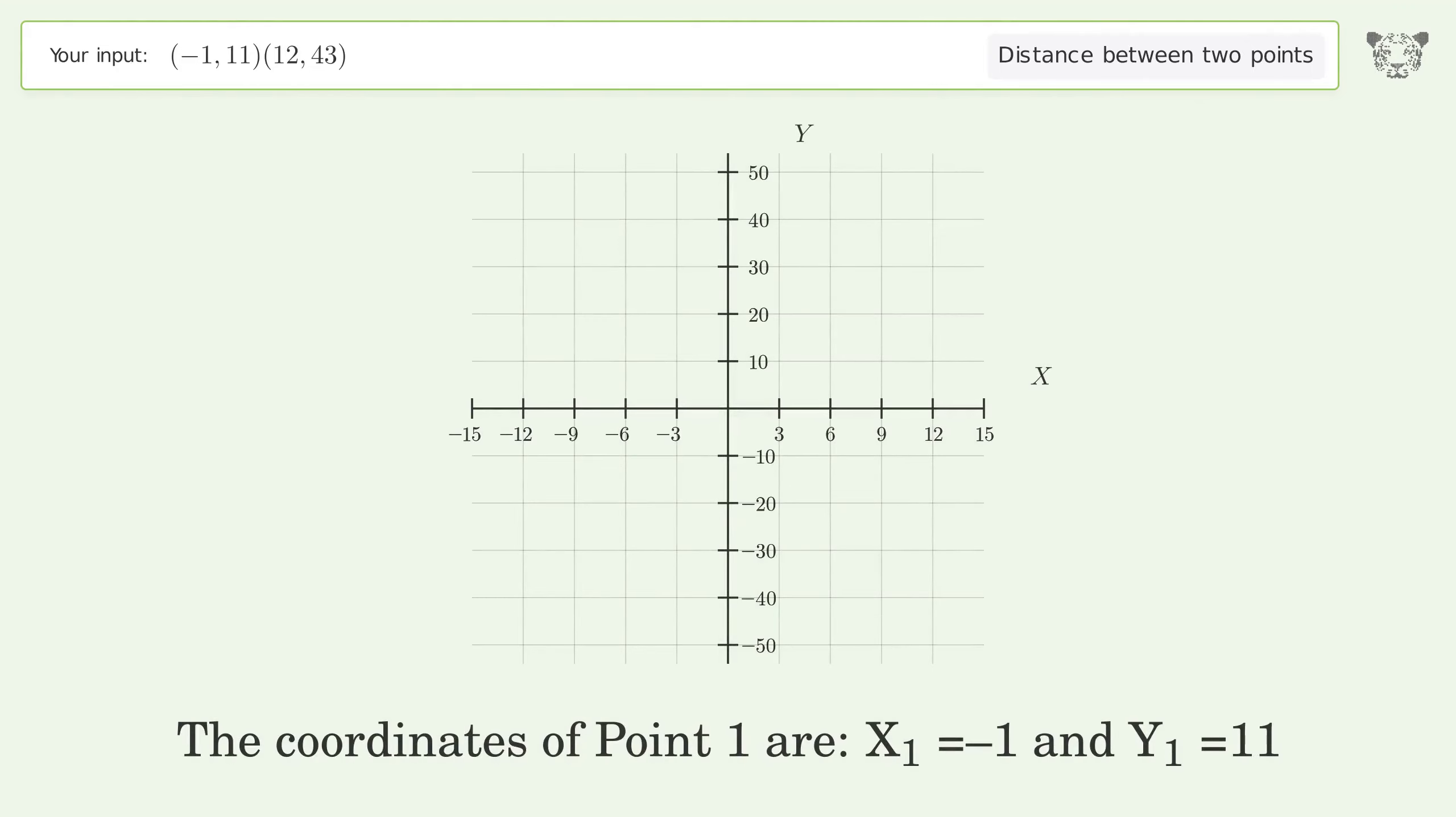The coordinates of point one are x₁ = -1 and y₁ = 11. The coordinates of point two are x₂ = 12 and y₂ = 43.